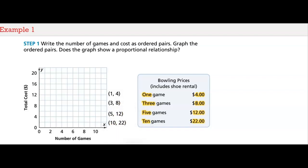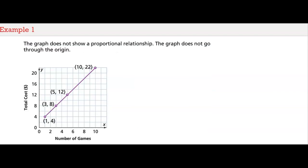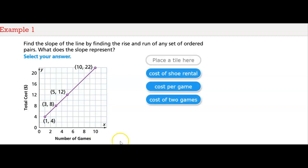Then plot the ordered pairs and find the slope to determine the cost of each game. Does the graph show a proportional relationship? The graph doesn't show a proportional relationship. It doesn't go through the origin, zero zero. Now we can use the graph to find the slope of the line. What is the slope? Select your answer.